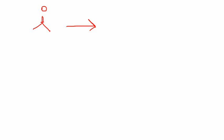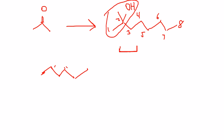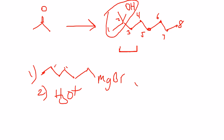The last question was to start from acetone and convert it into 2-methyloctan-2-ol. It's a ketone, so it's a pretty simple reaction. Since this is a tertiary alcohol product, you simply treat acetone with a hexyl Grignard — counting 1,2,3,4,5,6 carbons — so use hexyl MgBr and follow it with hydrolysis, and that gives you the desired molecule.